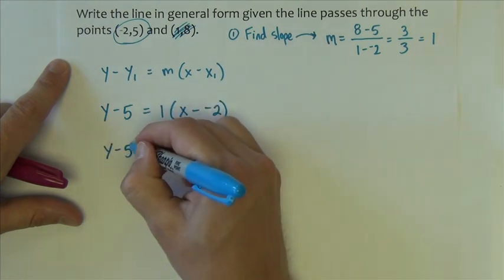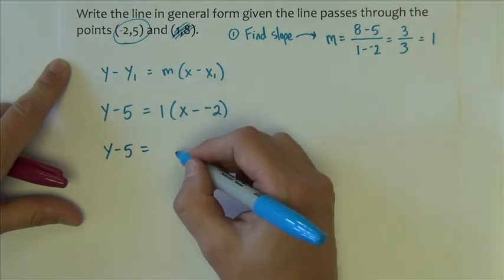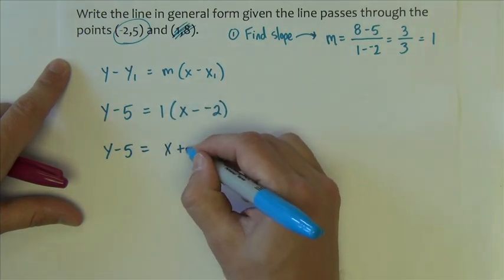So I'd have y minus 5 equals 1x minus negative 2. So that's y minus 5 equals, having the 1 in front of the parentheses is not necessary, so I'm just going to drop the parentheses, x plus 2.